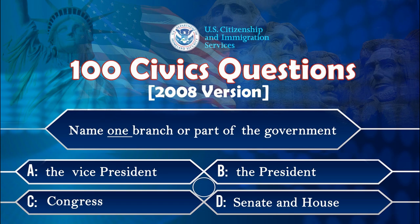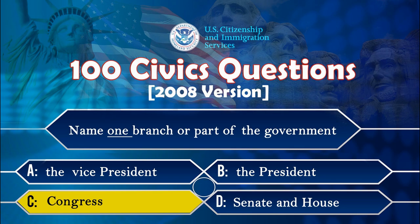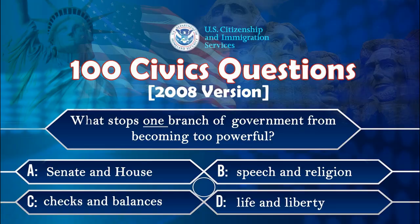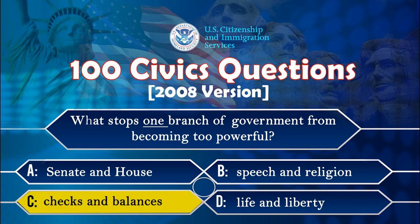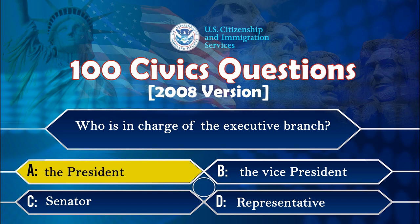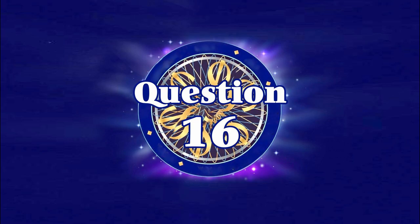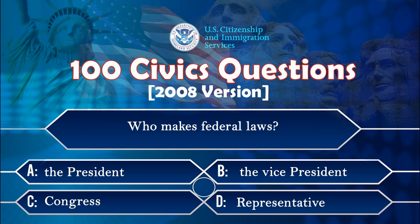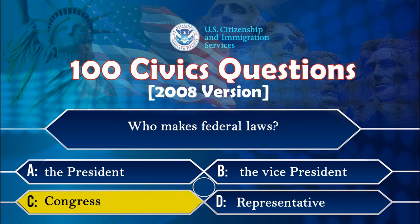Name one branch or part of the government. Congress. What stops one branch of government from becoming too powerful? Checks and balances. Who is in charge of the executive branch? The president. Who makes federal laws? Congress.